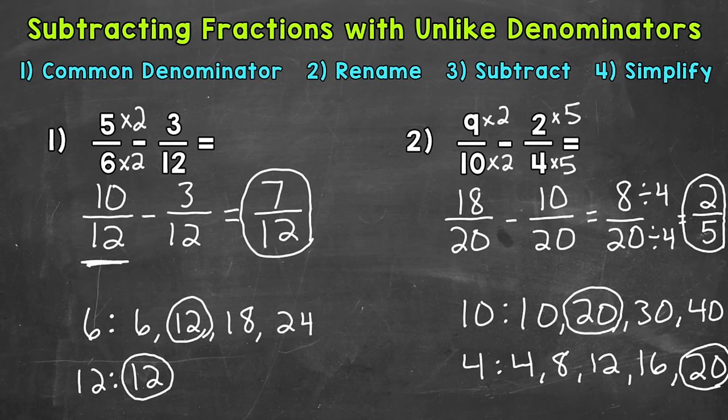Just to be clear, 8 twentieths is the correct answer, but we were able to simplify it to get 2 fifths. If you need more help with simplifying fractions, I added a link in the description. This was part 1 of subtracting fractions with unlike denominators — I do have a part 2 with two more examples, link in the description as well. I hope that helped. Thanks so much for watching. Until next time, peace.